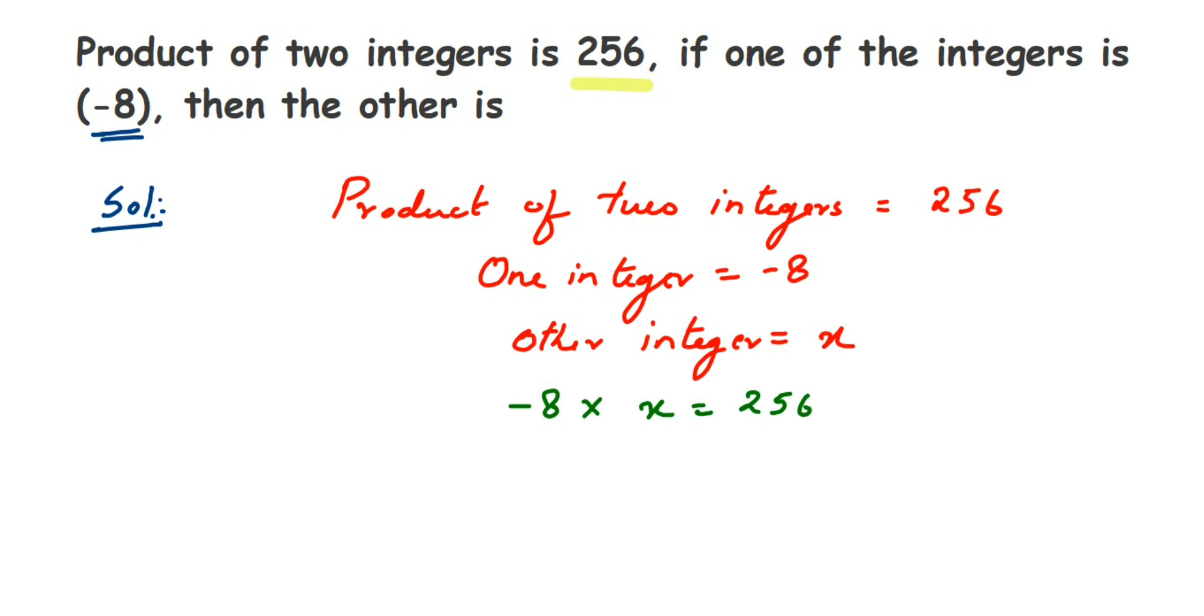Since we want the value of X, we're gonna transpose -8 to the other side, so X will be equal to 256 divided by -8. Now you can cancel this in 8 table or you can cancel this in 2 table, completely upon you.